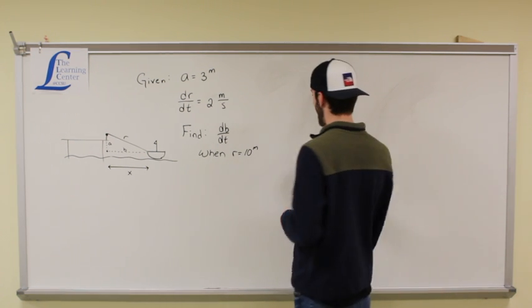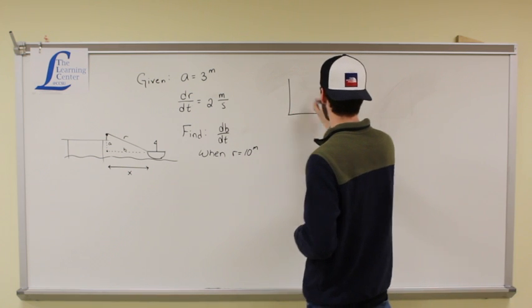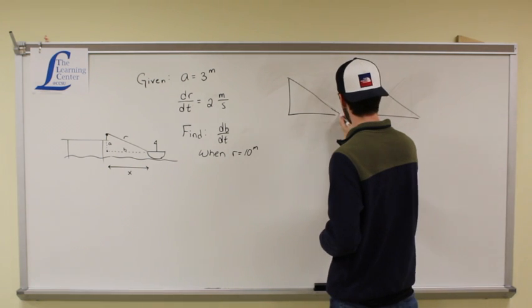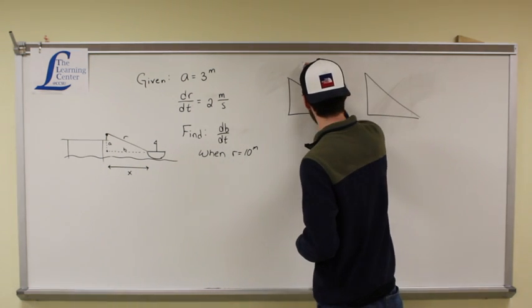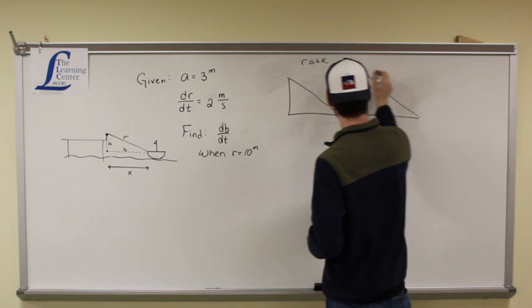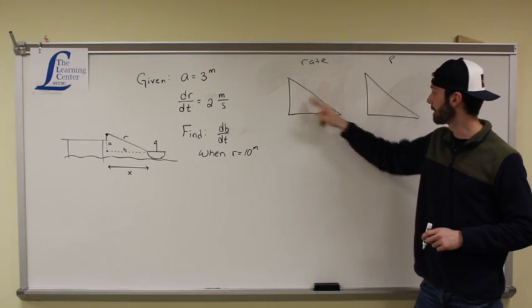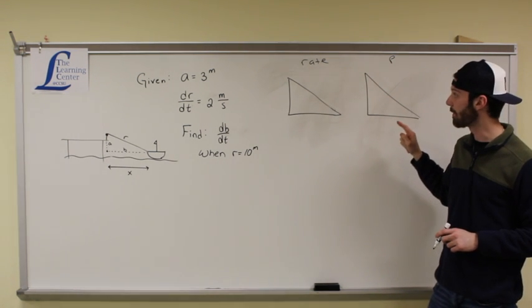So to solve this problem, I'm going to start with two triangles, a rate triangle and a position triangle. So I'm going to label those a rate triangle and a position triangle I'm going to call P. So you use these triangles to fill in the information you know and to fill in the information you don't know.